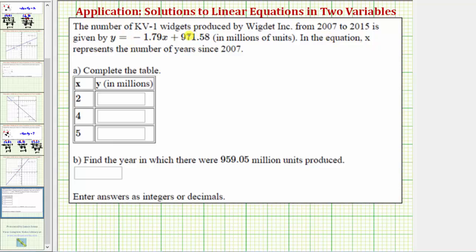The number of KV-1 widgets produced by Widget Incorporated from 2007 to 2015 is given by the equation y equals negative 1.79x plus 971.58 in millions of units. In this equation, x represents the number of years since the year 2007.